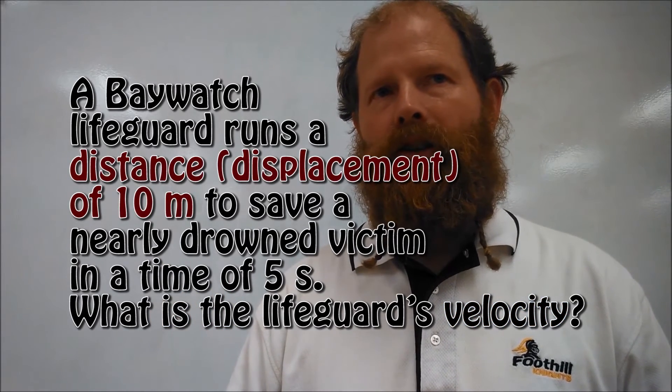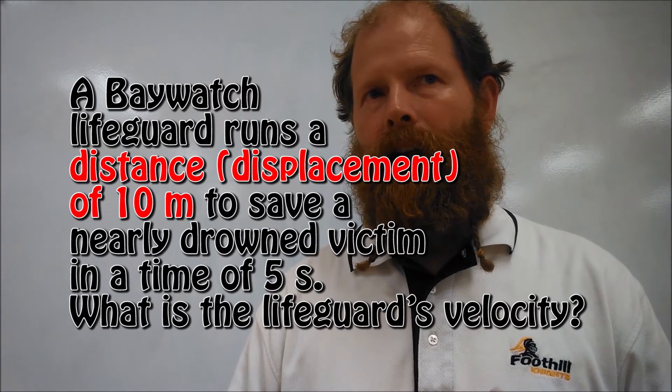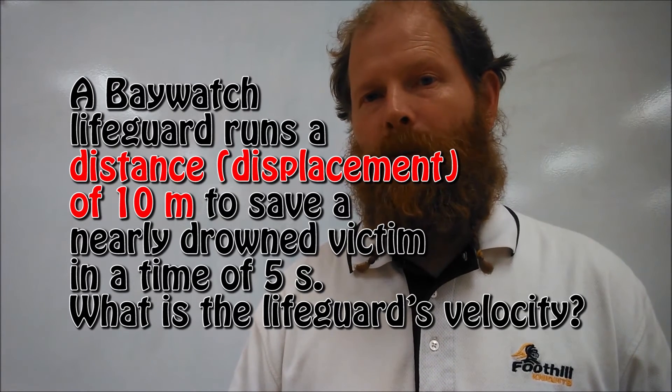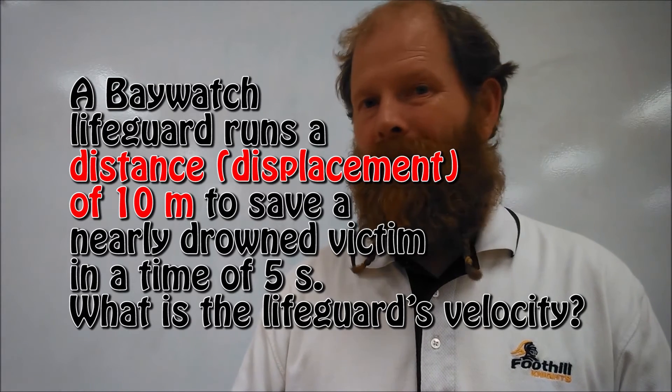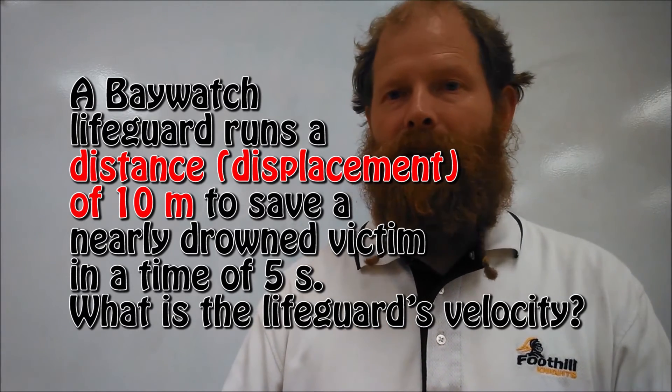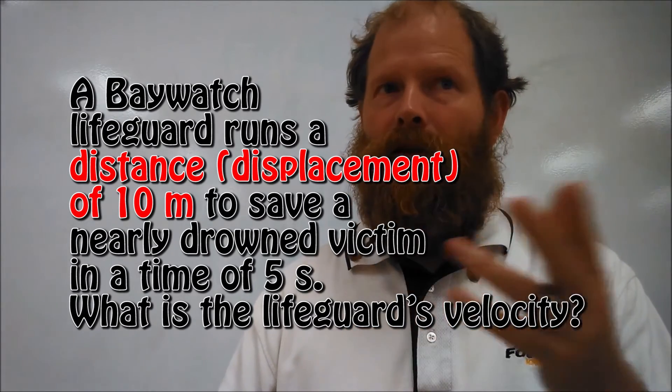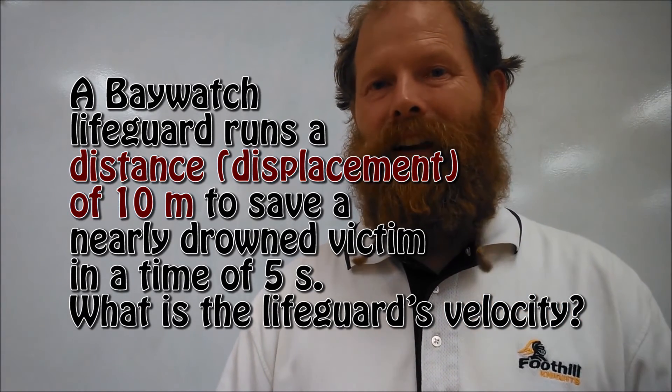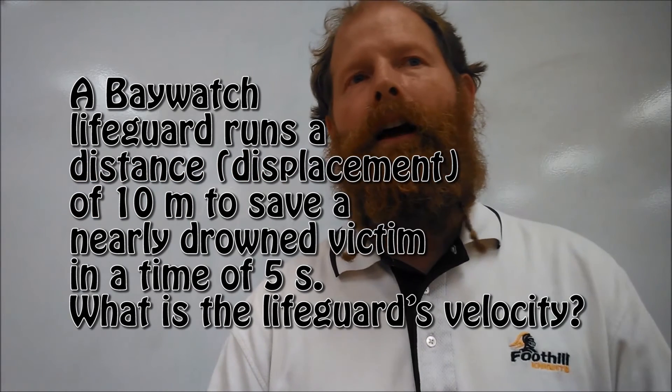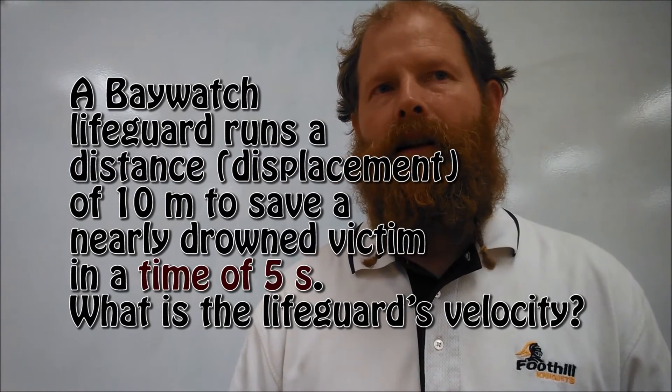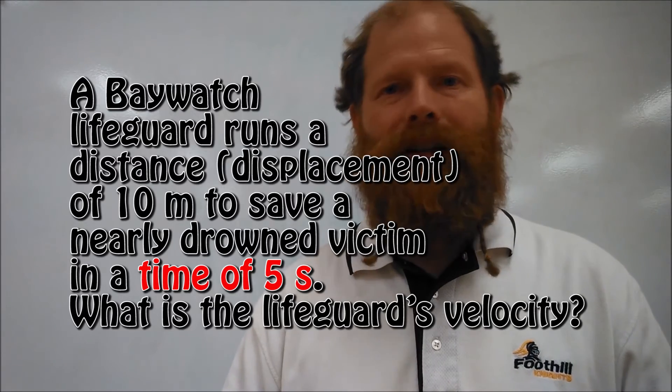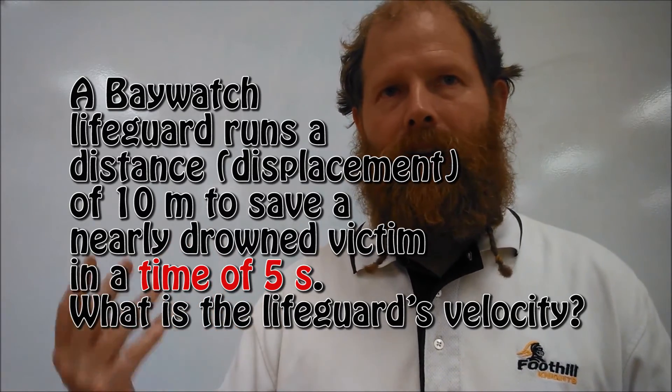Then we notice the distance or displacement is 10m. Well we notice the distance and displacement shows up on our list several times. So it could be a radius, it could be a displacement, it could be a distance. It's a distance or displacement. So we're going to put either D or delta X. And then we see that a time of 5 seconds. So we look up time. It's either T or delta T. You can just list it as either one.